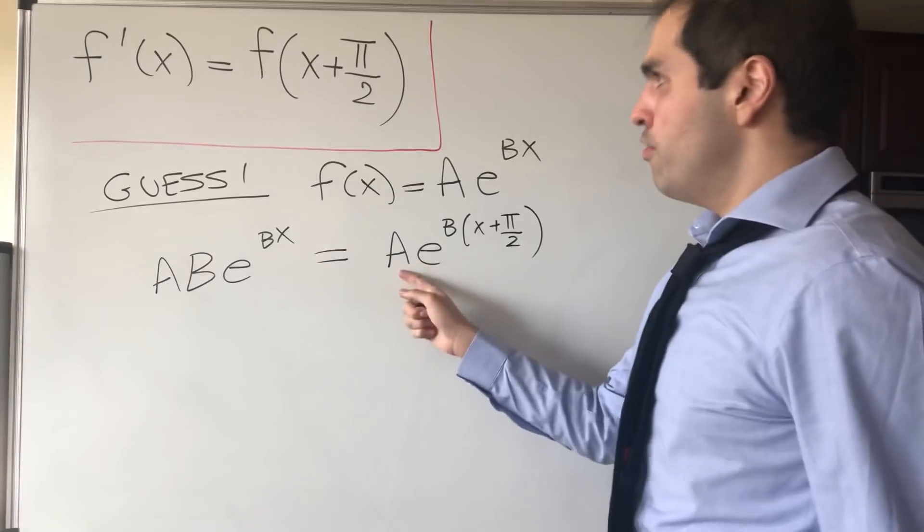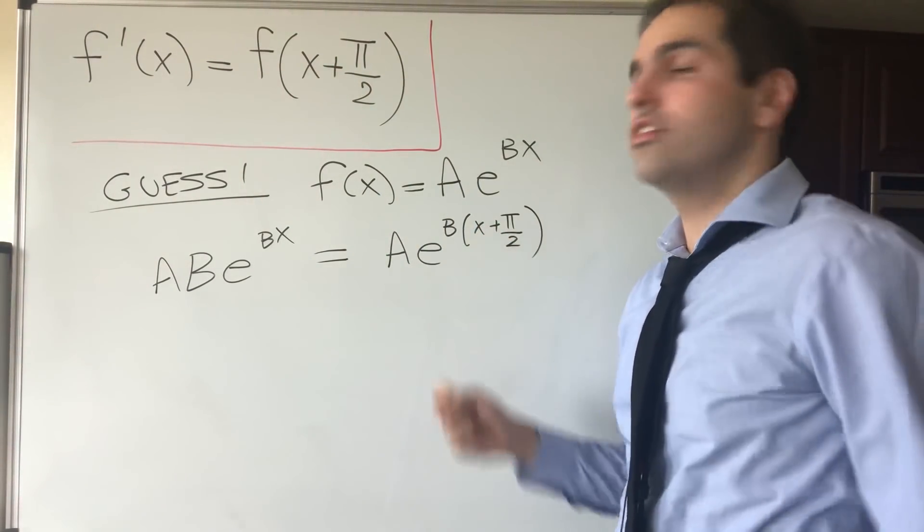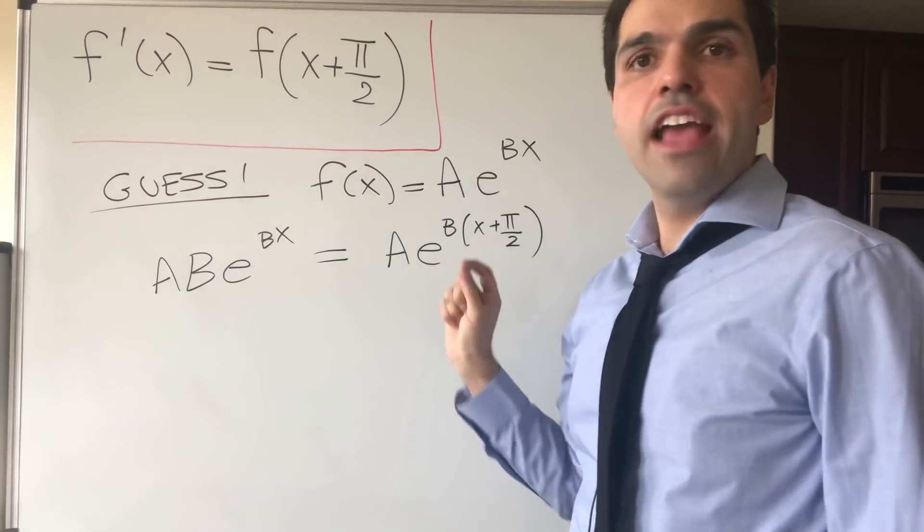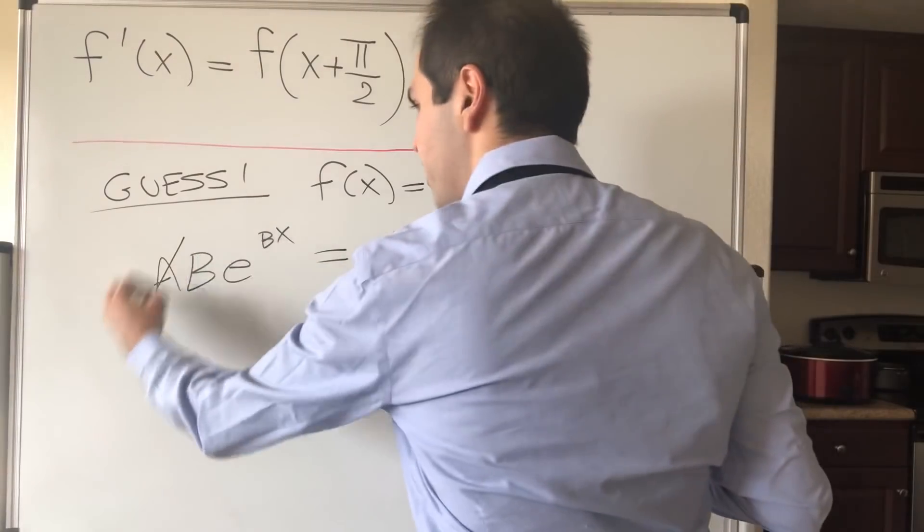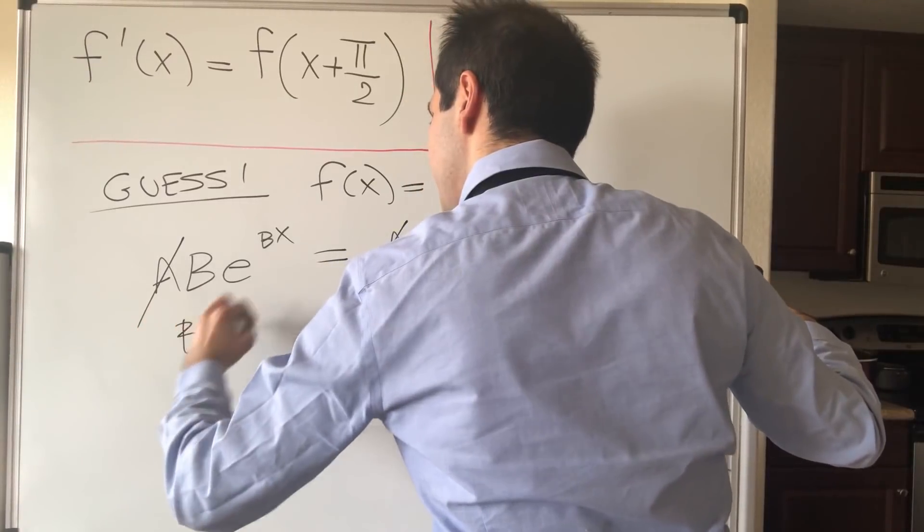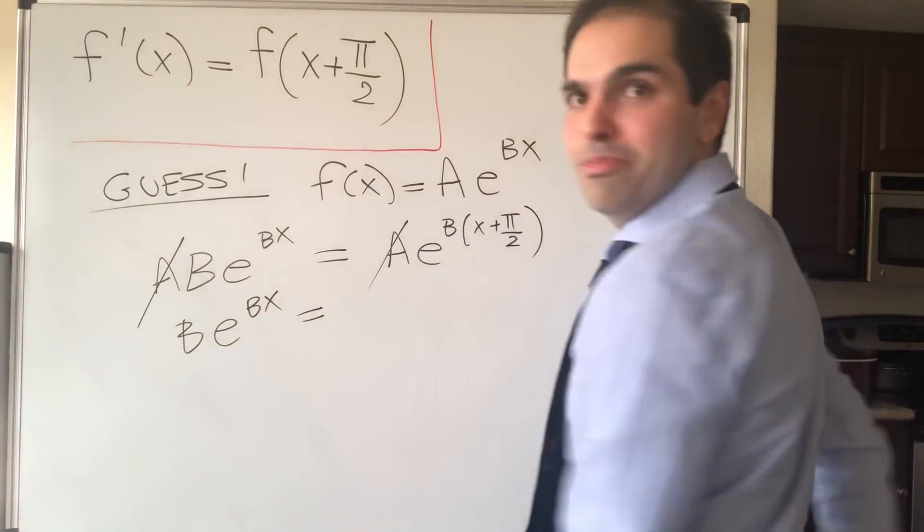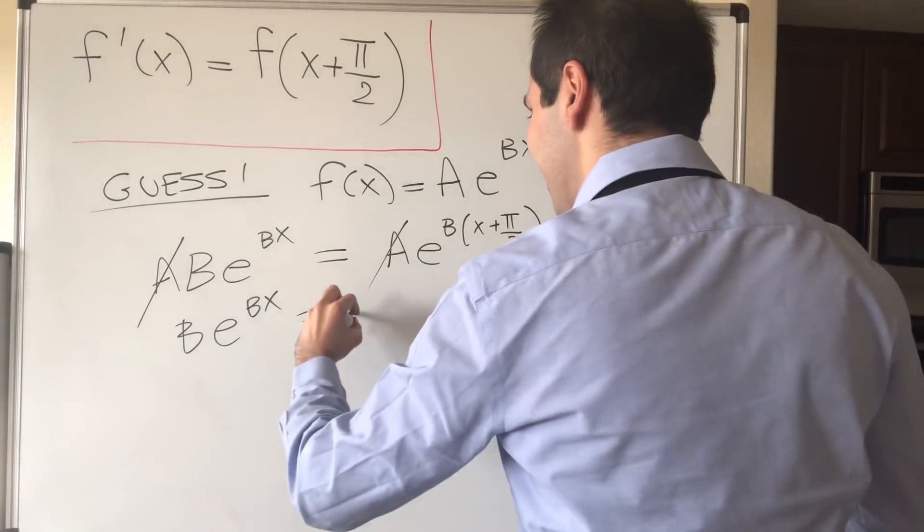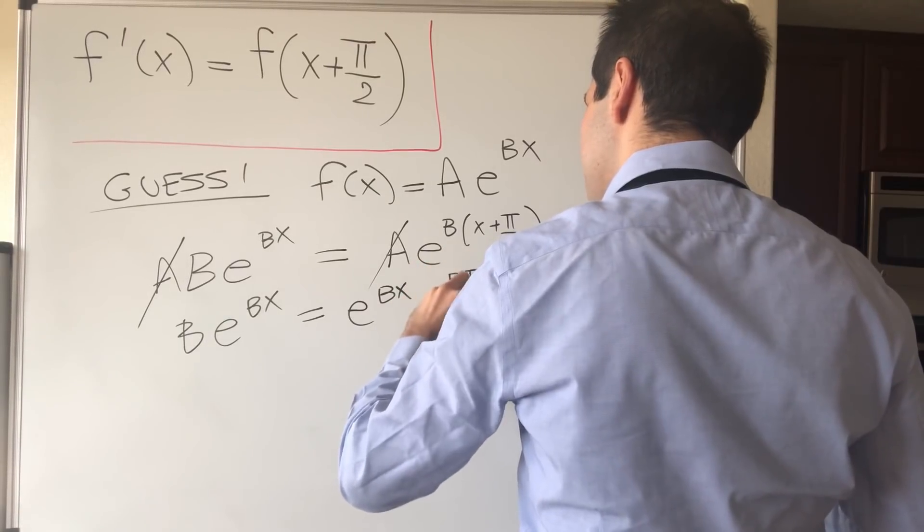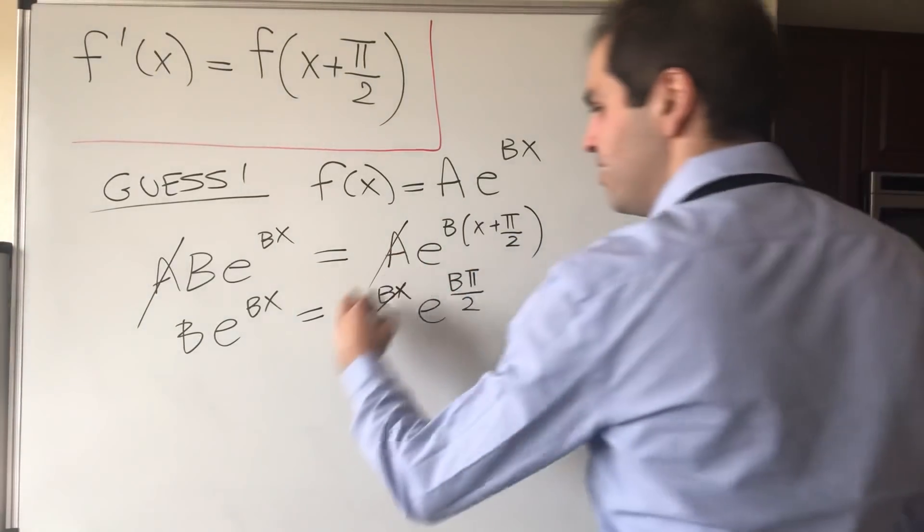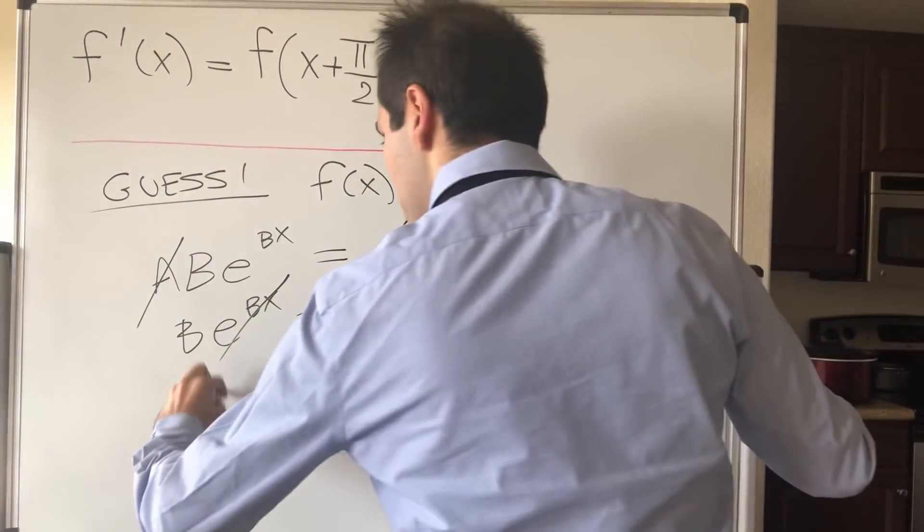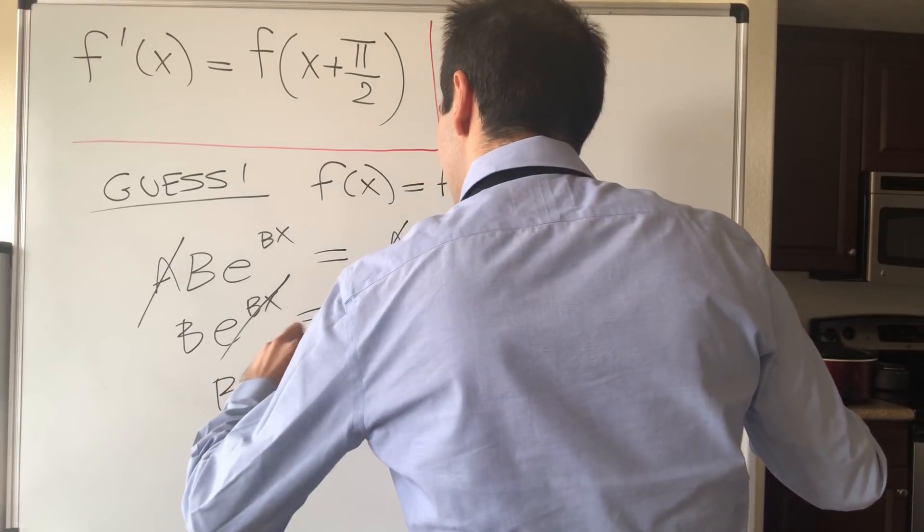So first of all, of course, the zero function is a solution, so we want to ignore that one. In particular, we may assume A is non-zero, so we can cancel out the A here. And then what we're left with is simply Be^(Bx) equals e^(Bx)e^(Bπ/2). And then we can cancel out the e^(Bx), and we're left with B equals e^(Bπ/2).